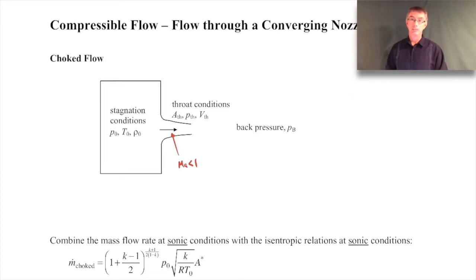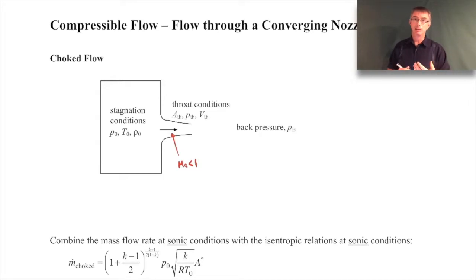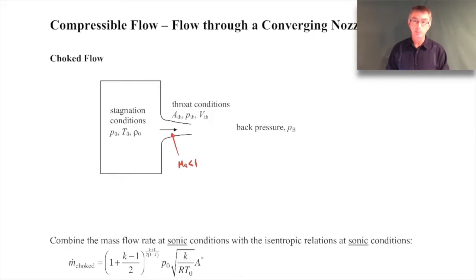Remember: starting from stagnation conditions, to get to supersonic you have to go through a minimum area first. You decrease the area to increase the Mach number toward one, but Mach one has to occur at a minimum area. Here the minimum area is right at the throat — the narrowest part. So in the converging section the Mach number will always be subsonic, because it's starting from stagnation conditions and hasn't yet reached that minimum area.